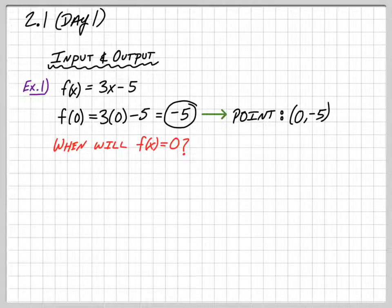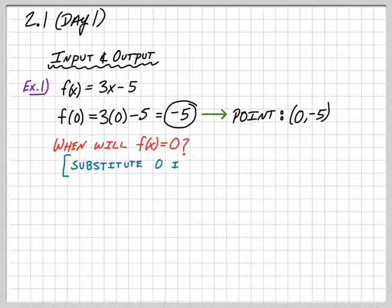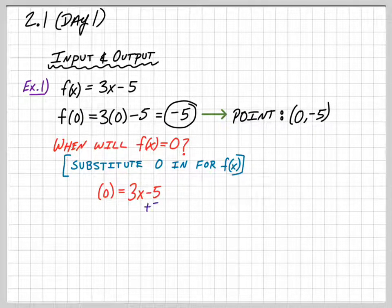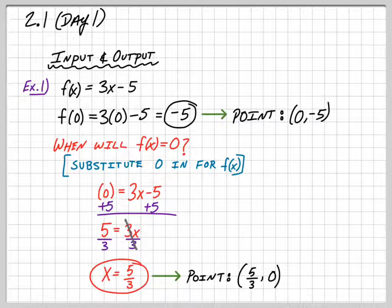My next question is: when will f of x equal 0? That's a different scenario than the previous one. When will the output for f of x be 0? Not what happens when I plug 0 in — this is asking when would the y value be 0. We substitute 0 in for f of x, so 0 equals 3x minus 5. Add 5 to both sides: 5 equals 3x. Divide by 3 to get x equals 5 thirds.